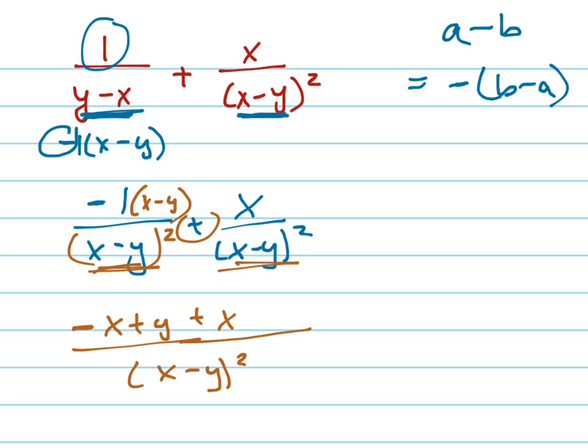Plus X. So I distribute that and I'm adding them. Those go away. I just get Y all over X minus Y squared. That's my answer.